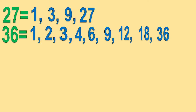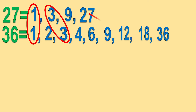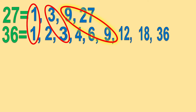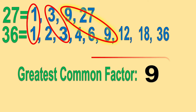Now, encircle the common factors. We have 1, 3, and 9. Identify the largest number in common — we have 9. So the GCF or the greatest common factor is 9.